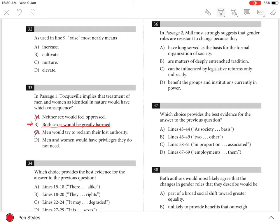And Choice D is incorrect because in the passage, Tocqueville never claims that treating men and women the same would result in superfluous privileges for either.